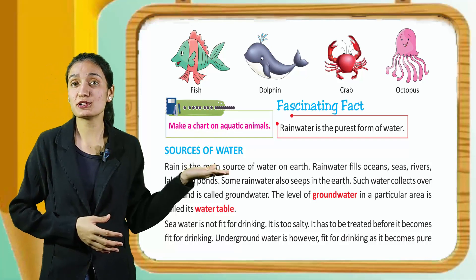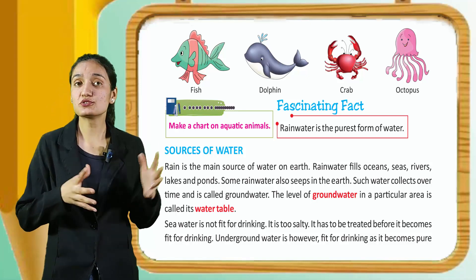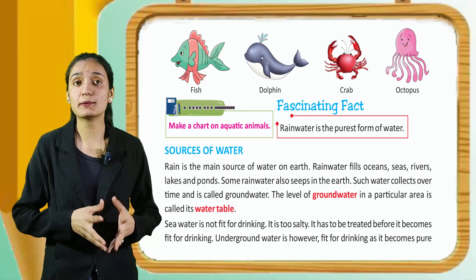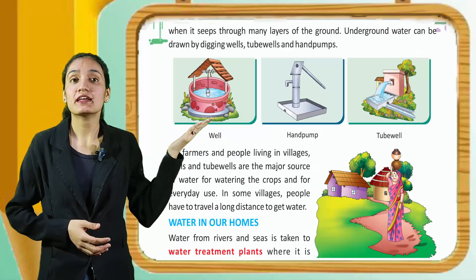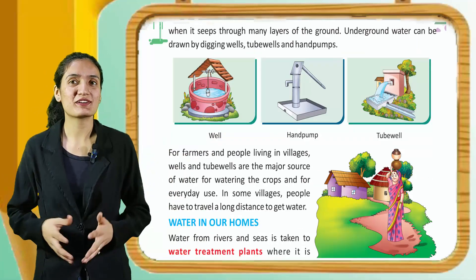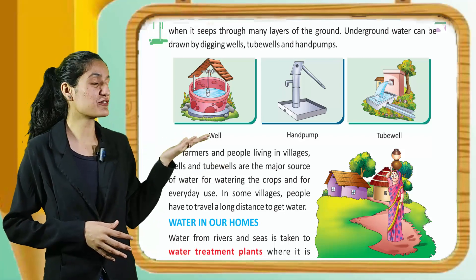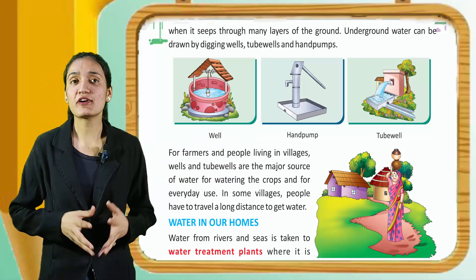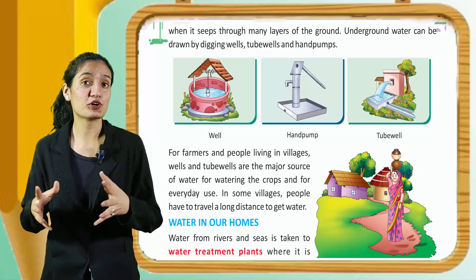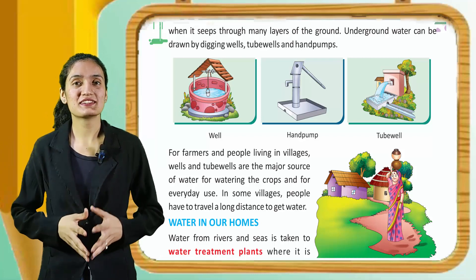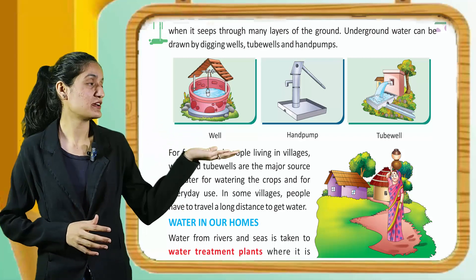Some rain water also seeps into the earth; such water collects over time and is called groundwater. The level of groundwater in a particular area is called the water table. Sea water is not fit for drinking as it is too salty — it has to be treated before it becomes fit for drinking. Underground water is fit for drinking, as it becomes pure when it seeps through many layers of ground. Underground water can be drawn by digging wells, tube wells, and hand pumps. For farmers and people living in villages, wells and tube wells are major sources of water for watering crops and everyday use.